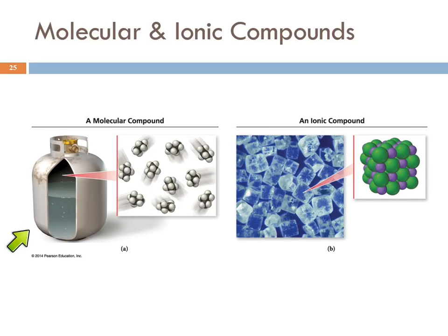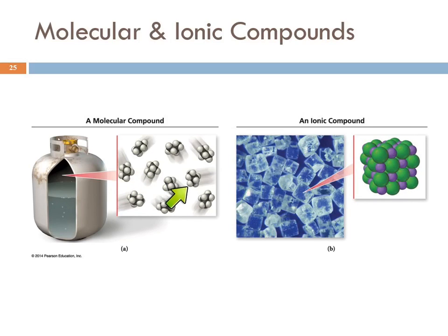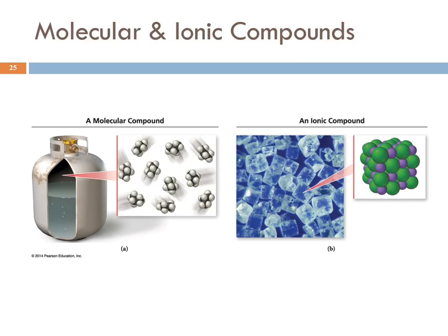Here is a molecular compound, propane, which has individual molecules — each molecule has the same number of carbon and hydrogen atoms. Here is an ionic compound, sodium chloride. Each crystal is composed of the same type of lattice, but a larger chunk will have more ions and a smaller chunk fewer ions. The ratio of sodium to chloride remains the same, though.